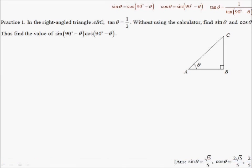In practice 1, the right-angled triangle ABC has the ratio tanθ equal to half. With respect to θ, this side will be my opposite, this side will be my adjacent, and this side will be my hypotenuse. Since tanθ is defined as opposite over adjacent, this side will be 1 and this side will be 2.